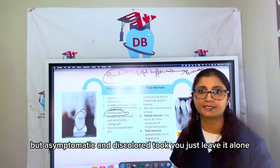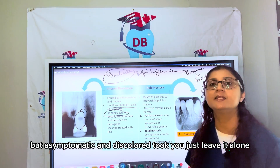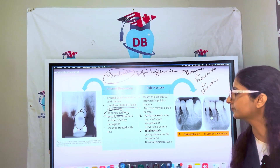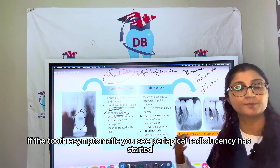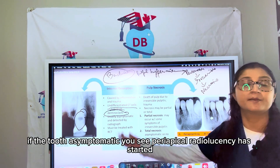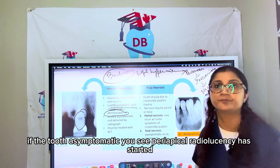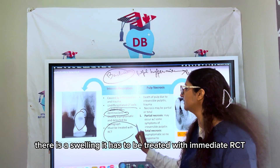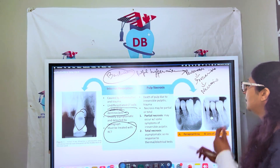If the tooth is asymptomatic and discolored, you just leave it alone and observe the case. However, if the tooth is symptomatic — periapical radiolucency has started or there is swelling — it has to be treated with immediate root canal treatment.